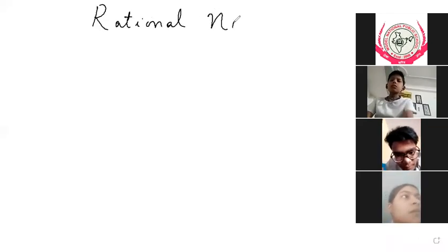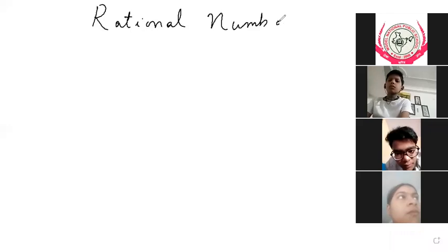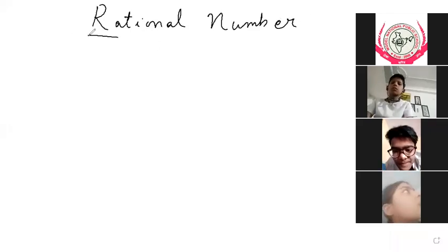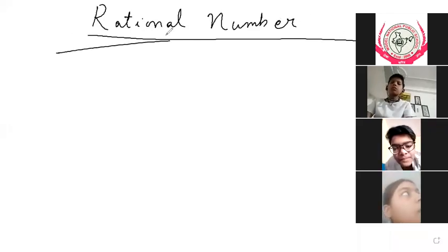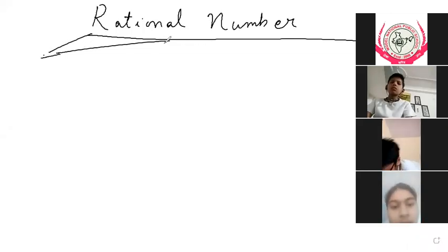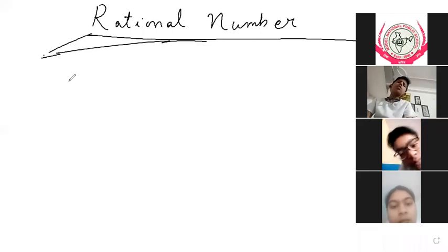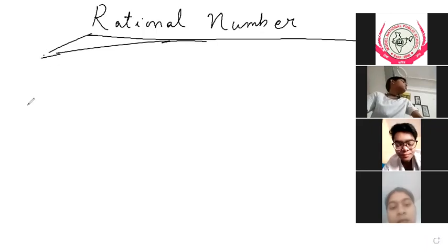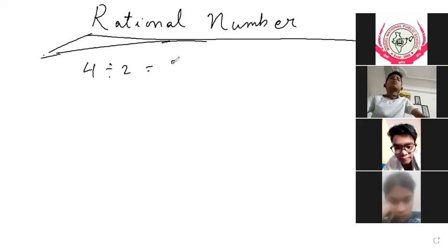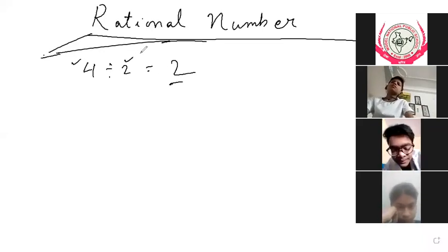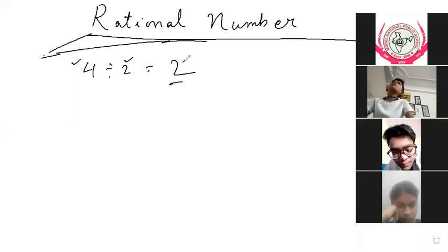What is the rational number? You know, 4 divided by 2 — the answer will be 2. Here, 4 is a natural number and 2 is a natural number. Whatever answer you get is also a natural number.